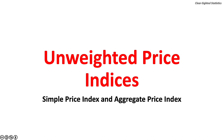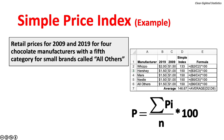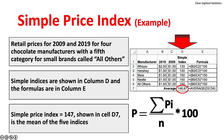Turning to unweighted price indices: the Simple Price Index and the Aggregate Price Index. A Simple Price Index compares changes in price for a market basket of items over two periods. The formula is the sum of the individual indices divided by the number of indices, times 100. For example, using retail prices for 2009 and 2019 for four chocolate manufacturers plus an All Others category, the Simple Index equals 147, rounded from 146.67, which is the mean of the five indices.